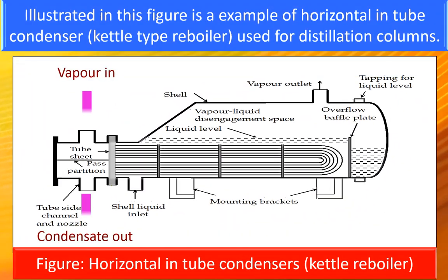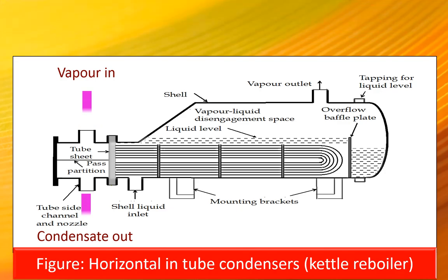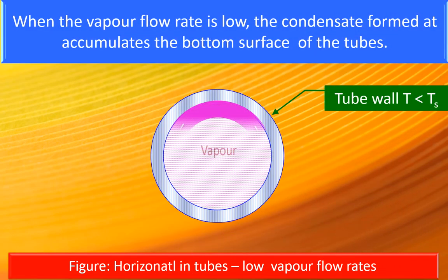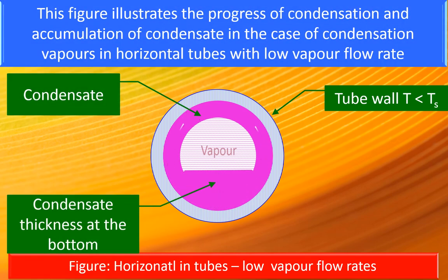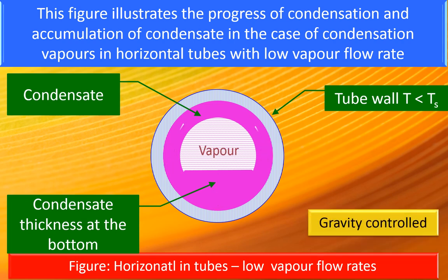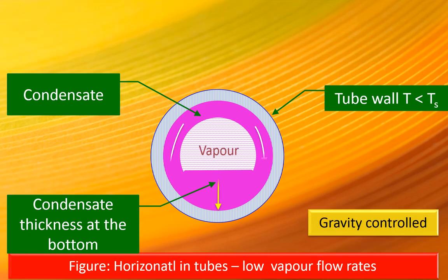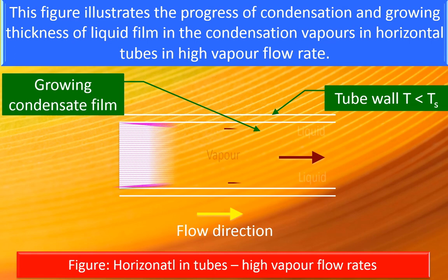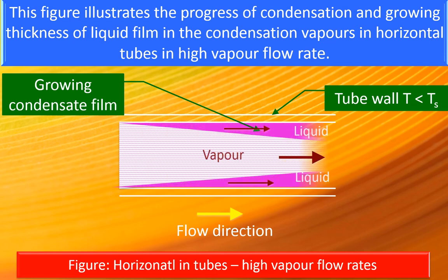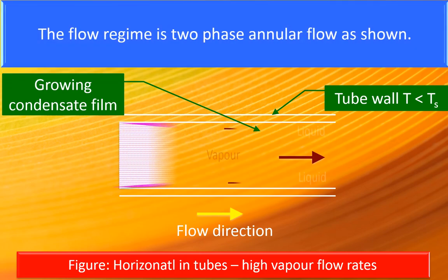An example of a horizontal in-tube condenser is a kettle type reboiler used for distillation columns. When the vapor flow rate is low, the condensate formed accumulates at the bottom surface of the tubes. When the vapor flow rate is very high, the flow regime is different — the flow regime becomes two-phase annular flow, as illustrated.